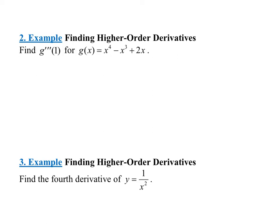Let's go ahead and take a look at this. To find the third derivative, we have to do one step at a time. So what would the first derivative be? The derivative of x to the fourth is 4x cubed. The derivative of negative x cubed is negative 3x squared. The derivative of 2x would be plus 2.